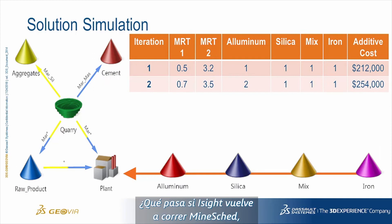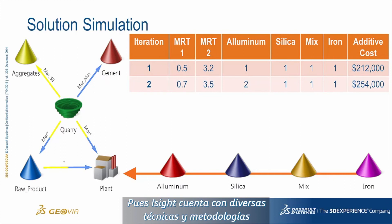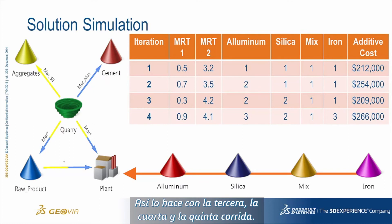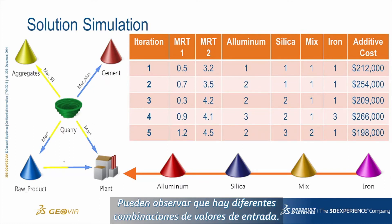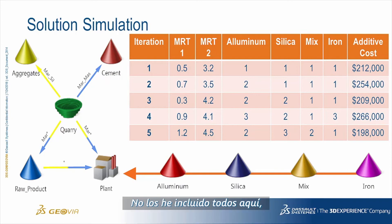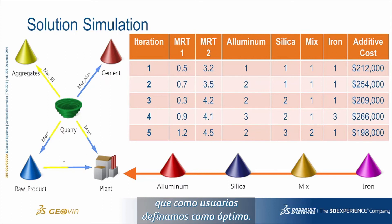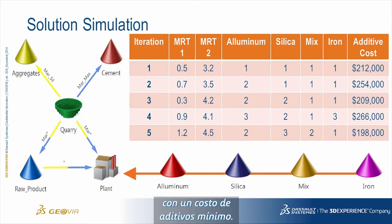iSight will simply run Mindshed again, except this time all the inputs are different. It has different methodologies and techniques for how to vary the values of the inputs. For the third, fourth, and fifth runs, you can see different combinations of inputs with different additive cost results. One of these is optimum — and we as users get to define what optimum means. For this particular project, optimum is an acceptable schedule with the minimum additive cost.